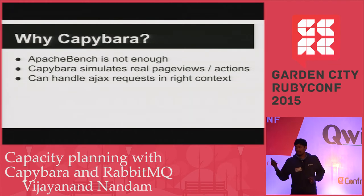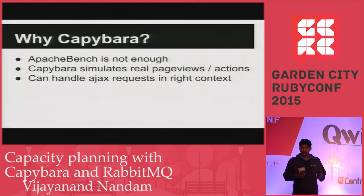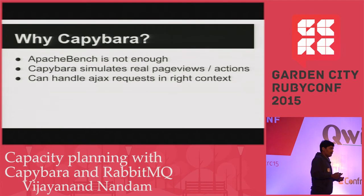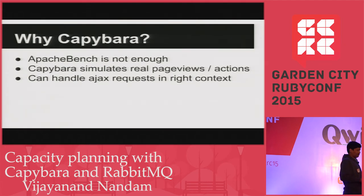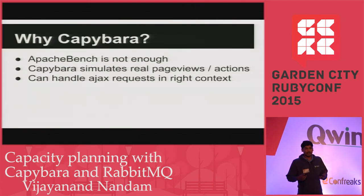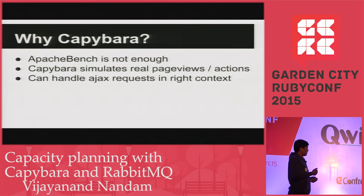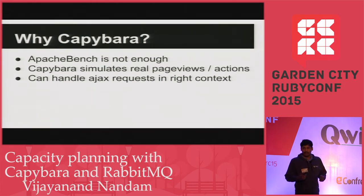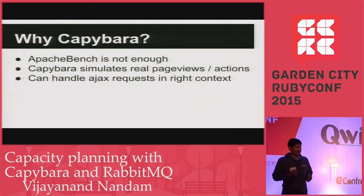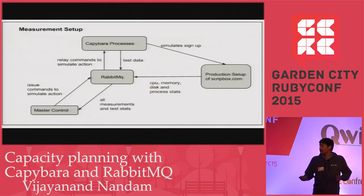Also, Apache Bench only hits a single URL repeatedly. When a user loads a page, that page loads assets — all the images and everything. Capybara actually puts a near real-time, real scenario load on the web server and the whole system.